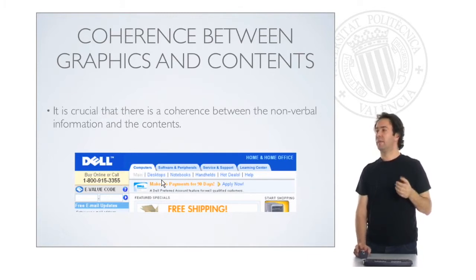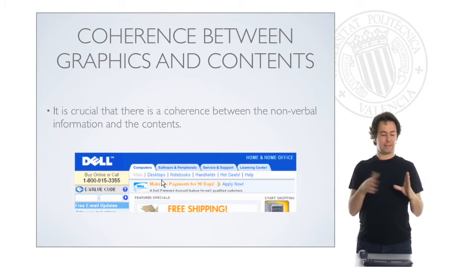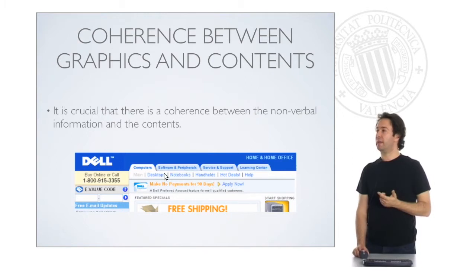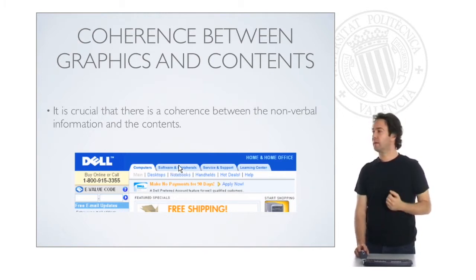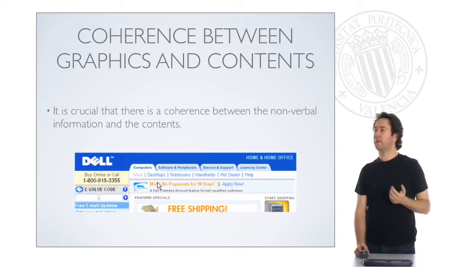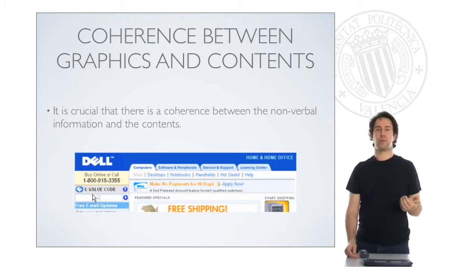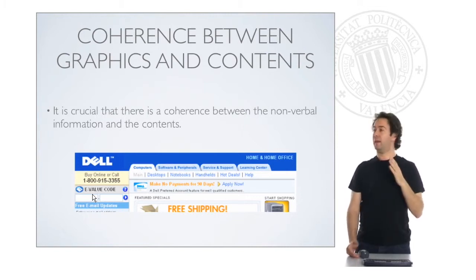Also, the metaphor of the folder indicates that there is a physical limit. So here it would be a big mistake if, for example, I click on 'software and peripherals' and not only this part changes but also another part changes. That would be a big confusion for the reader, because the reader expects this menu to behave as a folder.